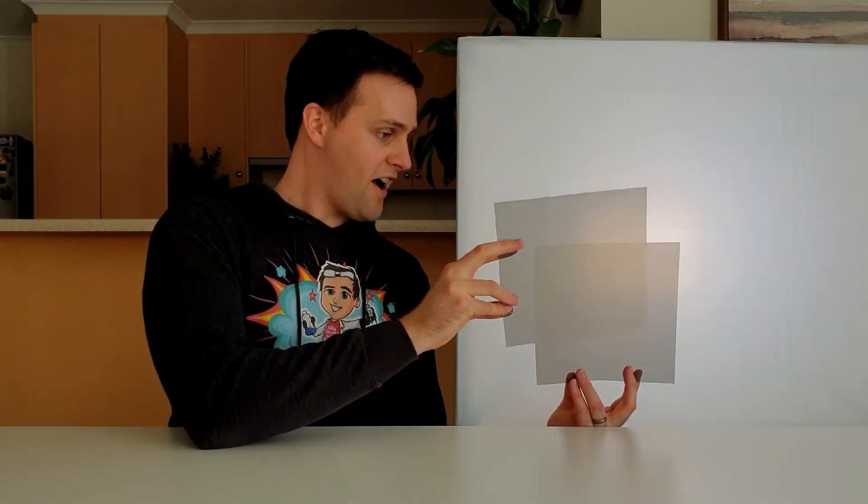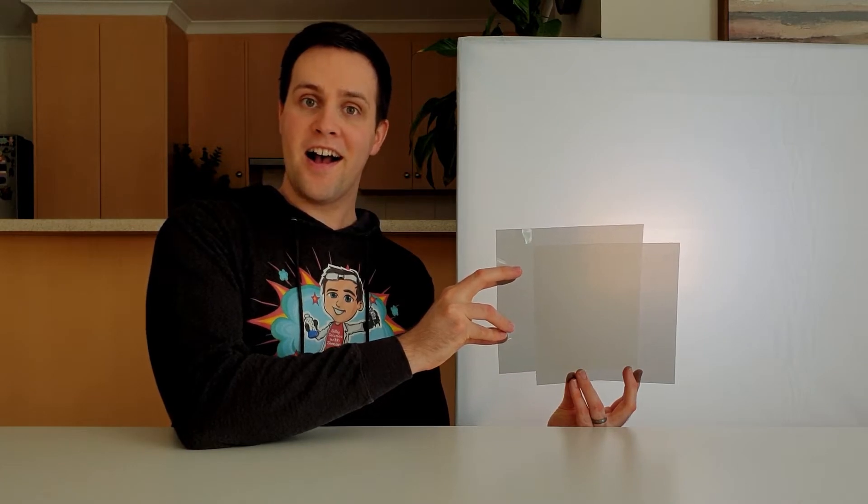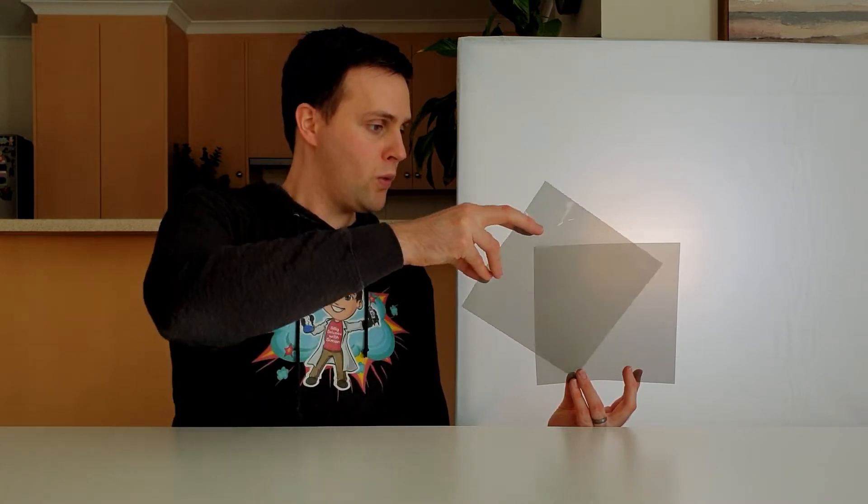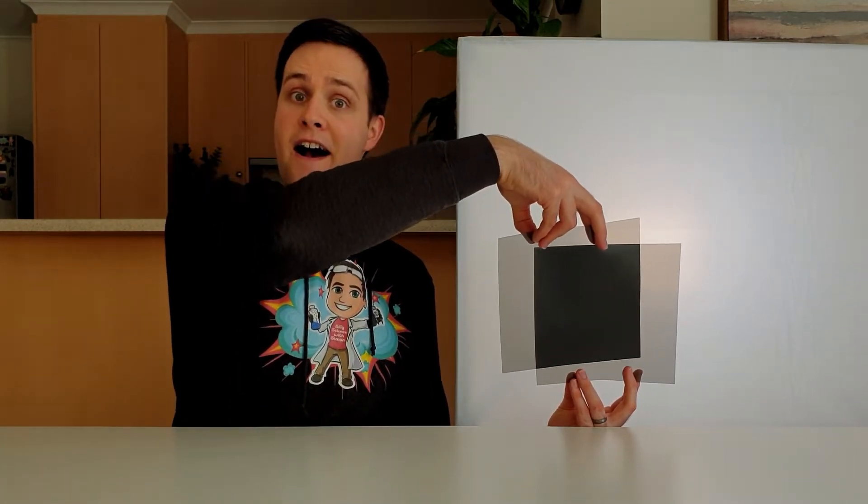Firstly, if we place the polarizers on top of each other, light passes through them. But when we turn one of them 90 degrees, the light gets blocked.